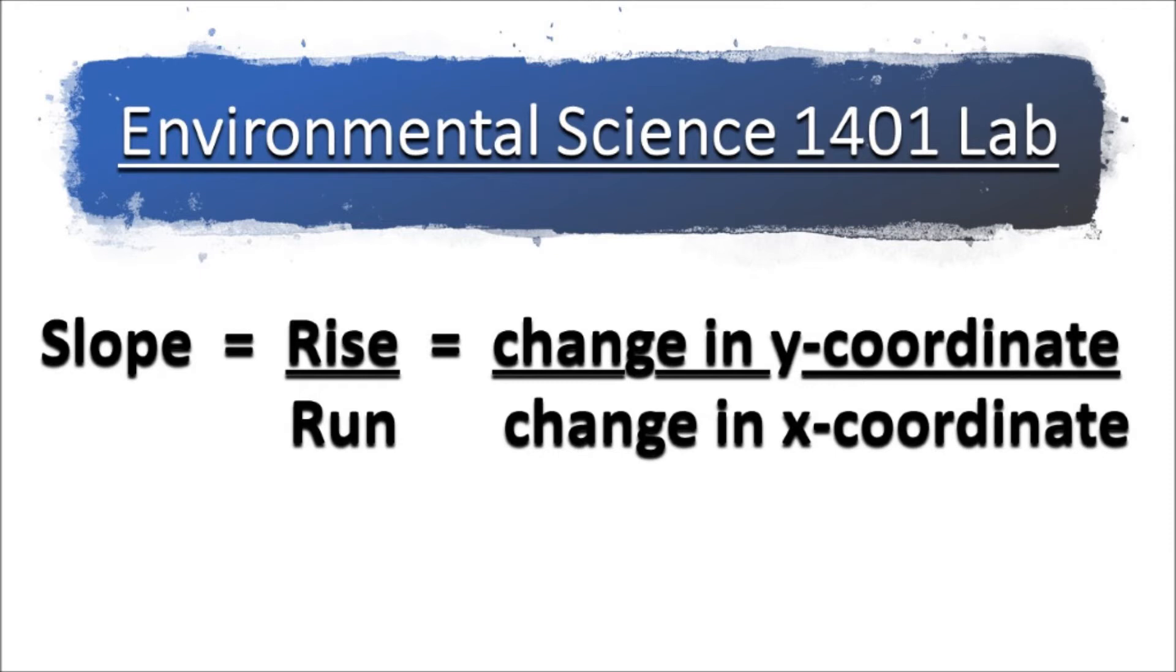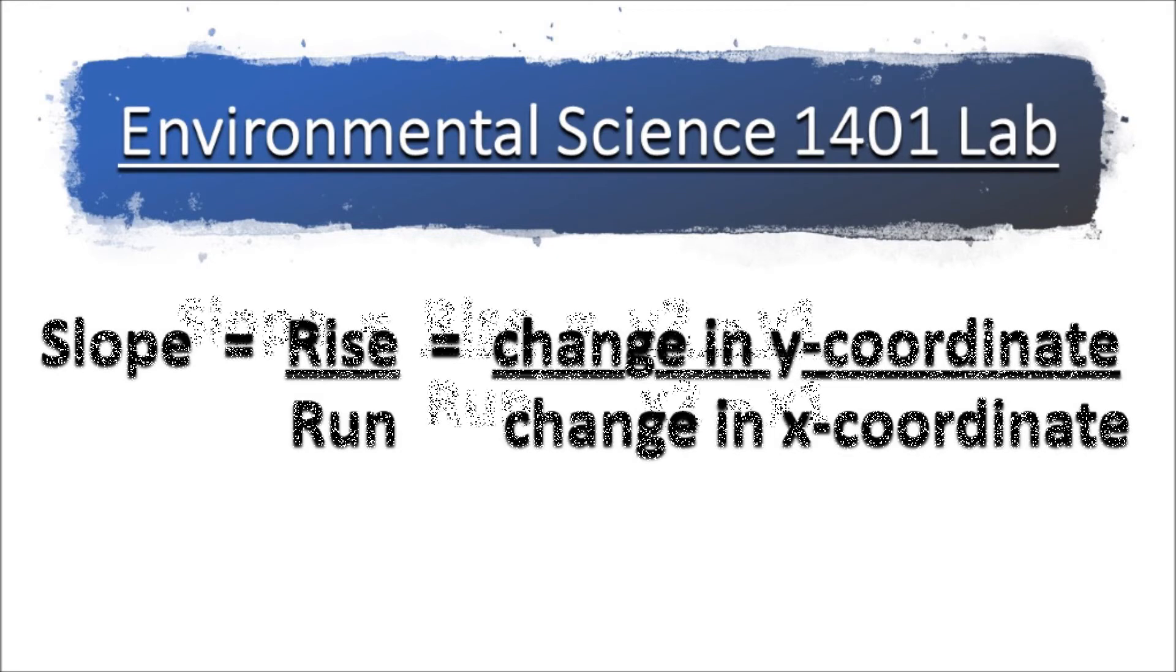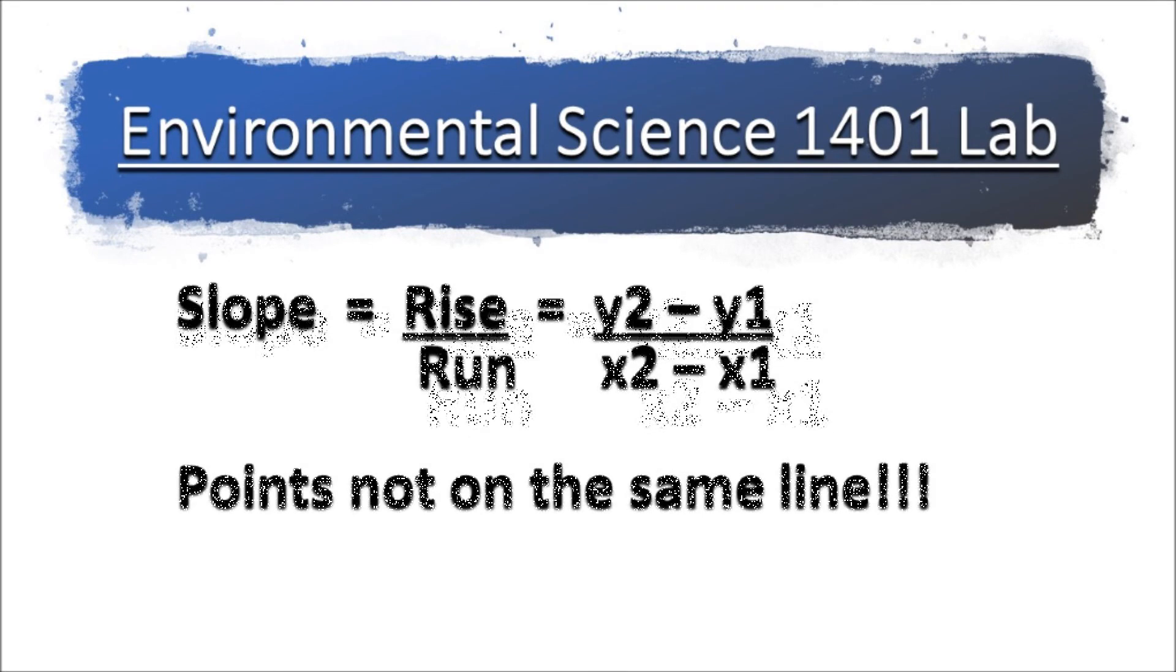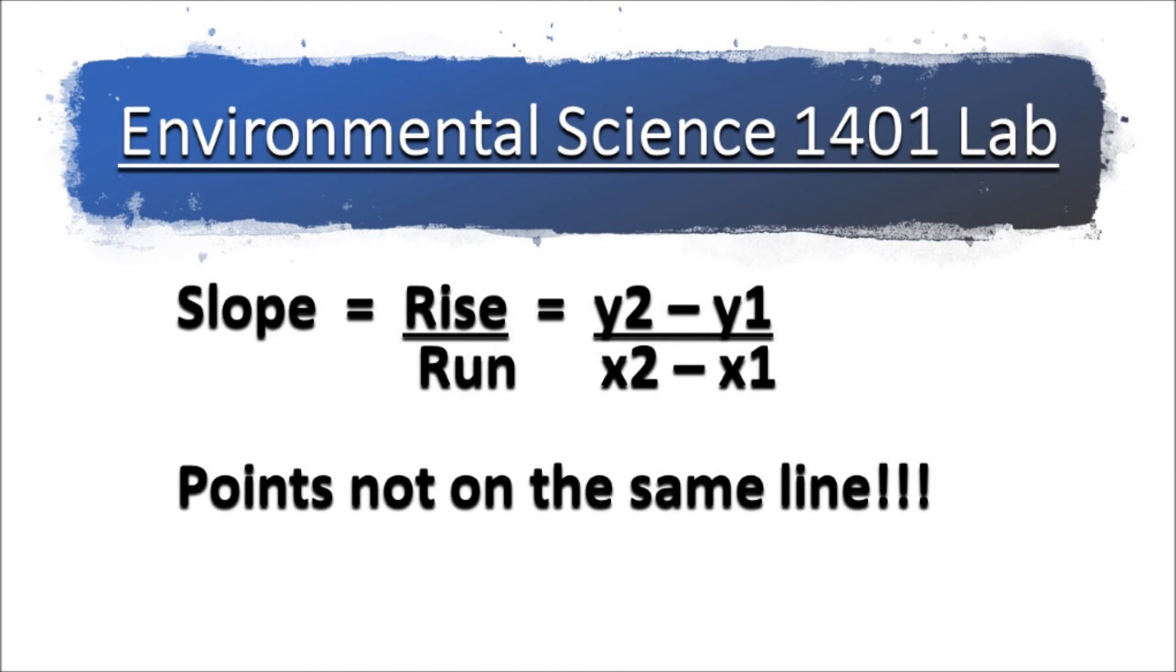Many of you may remember from algebra: rise over run. We find the change in the y coordinate over the change in the x coordinate. Here's the formula: y2 minus y1 divided by x2 minus x1. But we can't use this formula because these points are not on the same line.